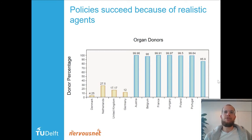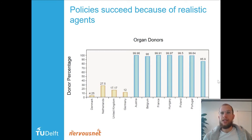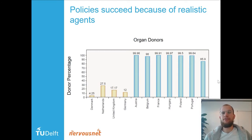And you see Austria, Belgium, etc., having a very high donor percentage. Any idea why this is? Could it be religion or culture?